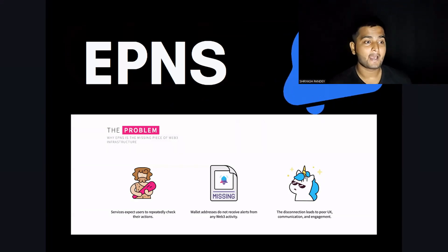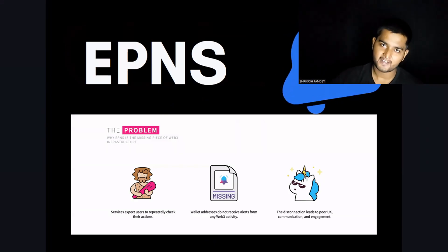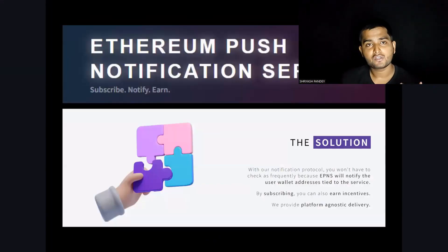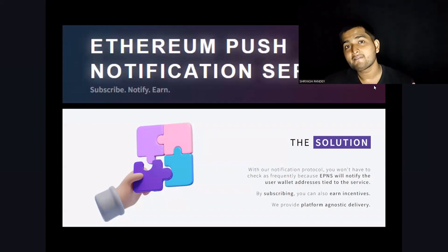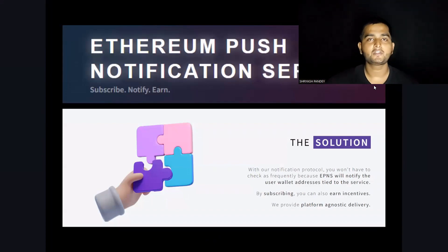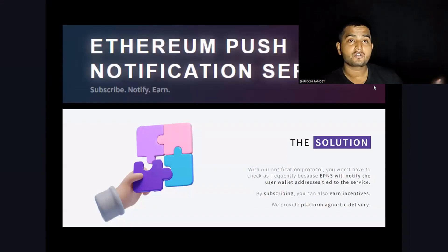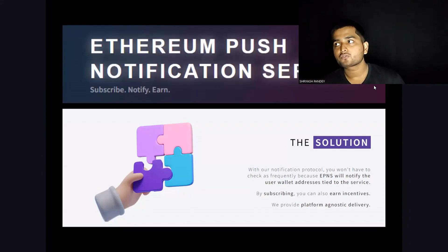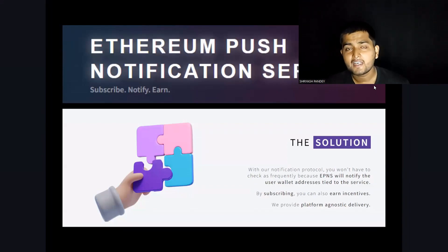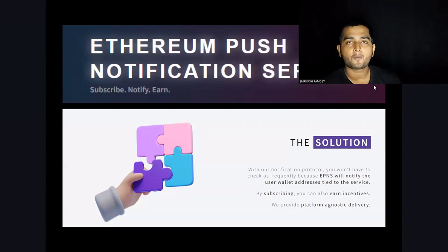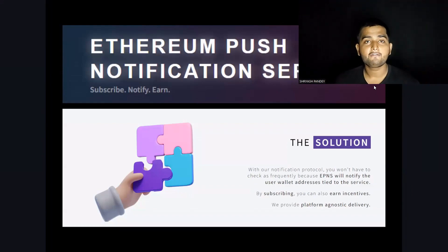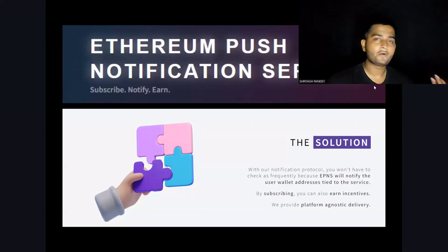There was a big gap in Web3: no public notification protocol. To fill that gap, EPNS came — EPNS stands for Ethereum Push Notification Service. It is an Indian project that solved this problem. If you trade in crypto, trade on DEXs and dApps, you can visit the Ethereum Push Notification Service website, subscribe to channels of dApps, and get instant notifications about critical bugs, liquidations, and other important events.